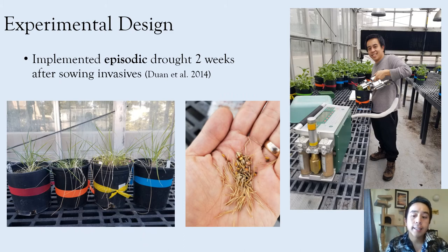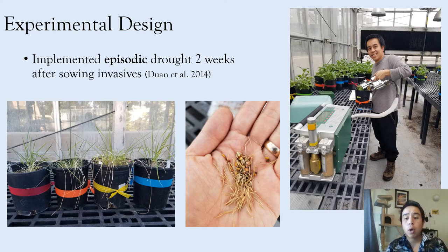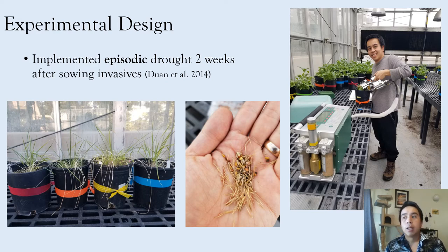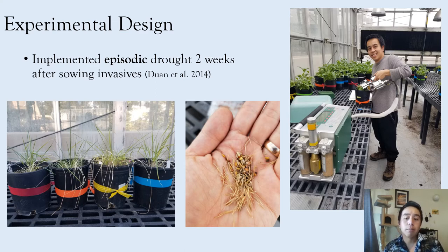We started the native species in flats and then transplanted them into one-gallon pots when they were large enough. Once in one-gallon pots, we allowed the plants to grow for six weeks before we sowed the non-native species treatment. The non-native species after sowing were well watered and allowed to grow for two weeks before we implemented the episodic drought. The episodic drought entailed not watering the plants at all until they reached a stomatal conductance threshold of 0.05. Once they reached that threshold, we re-watered the drought treatment and well-watered plants to field capacity and allowed them to be well-watered for 10 days. After 10 days, we implemented the second period of episodic drought, allowing them to again grow until reaching the stomatal conductance threshold, at which point they were harvested for final biomass measurements. We also took biomass measurements prior to implementing any treatment to establish baselines.